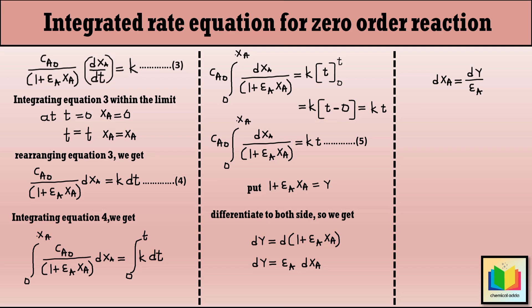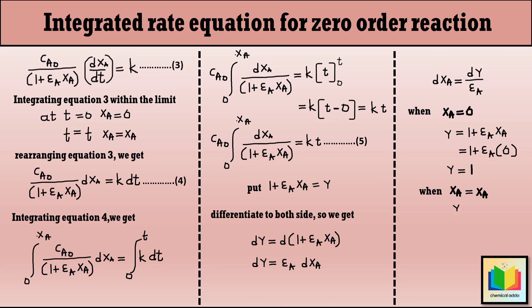Now let us change the limits. When X_A equals 0, Y equals 1 plus epsilon_A times 0, which gives Y equals 1. And when X_A equals X_A, Y equals 1 plus epsilon_A X_A.